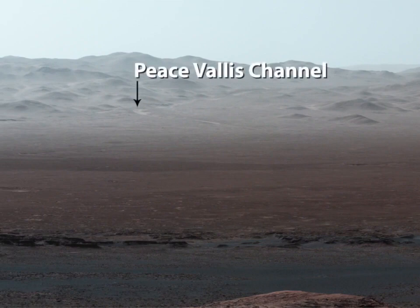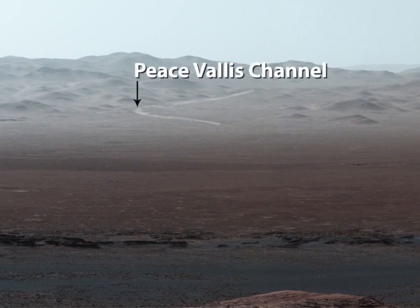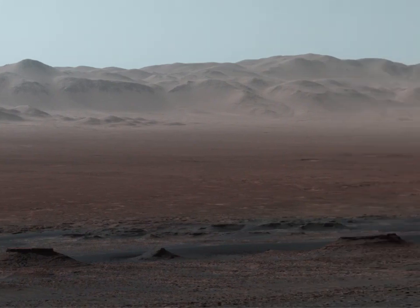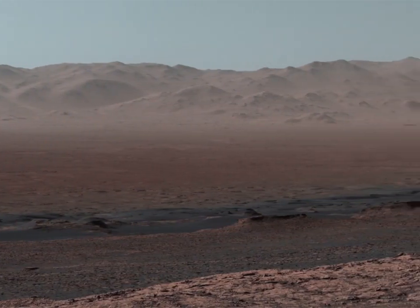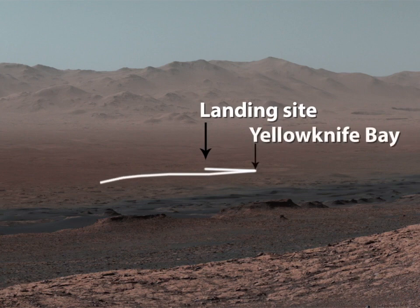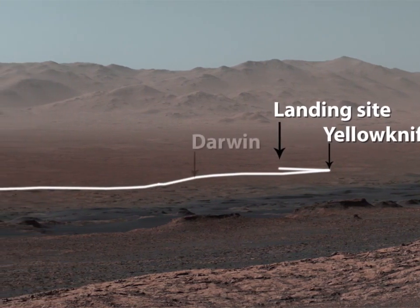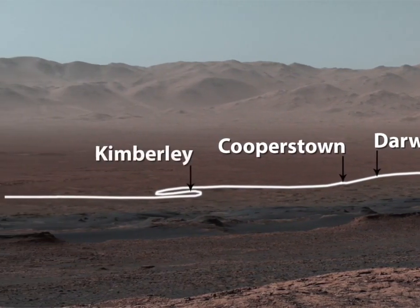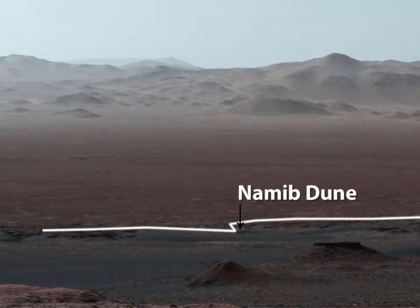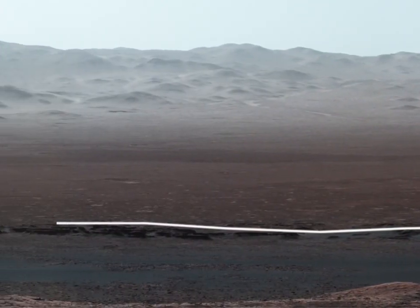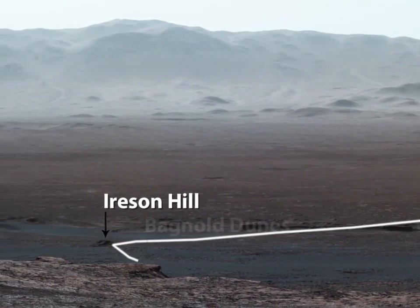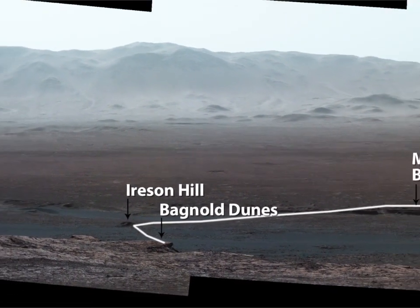I love how you can see Peace Vallis, a channel that once held a flowing river, like many others that formed lakes inside Gale Crater. This is also the first time we could look back and see everywhere we've been so far in the mission since landing in 2012. Here's the path we took — after landing, we drove to Yellowknife Bay before we turned southwest through Darwin, Cooperstown, and the Kimberley. The rover studied dark, wind-blown sand at Namib Dune. Curiosity then weaved between the Murray Buttes, checked out Ireson Hill, and made a tricky crossing of the Bagnold Dunes before reaching the ridge where it sits today and caught this amazing view.